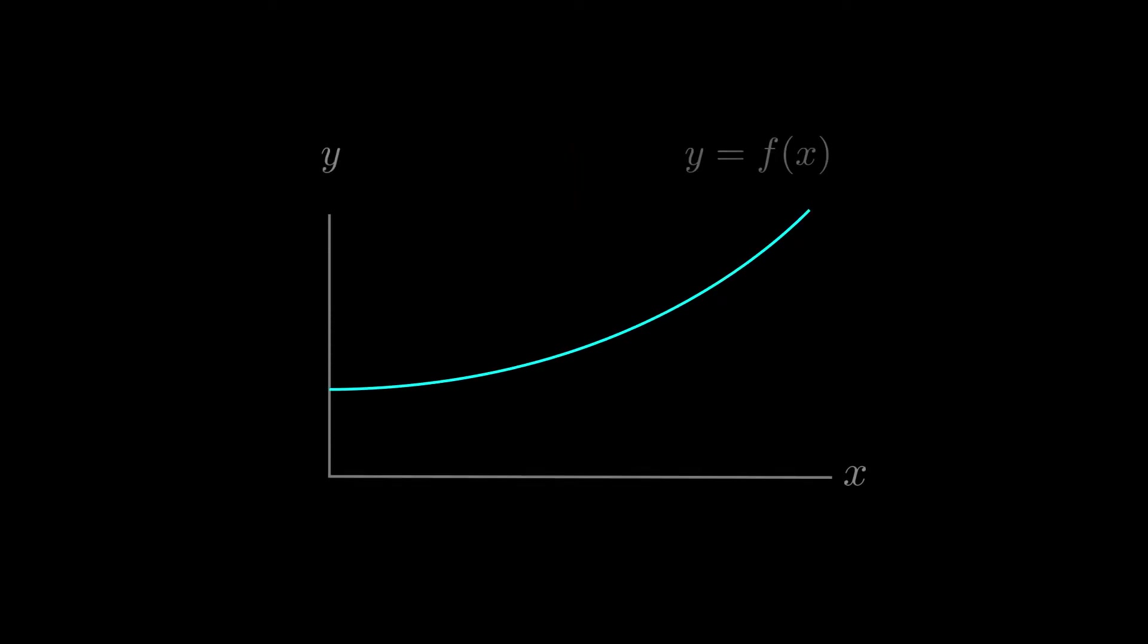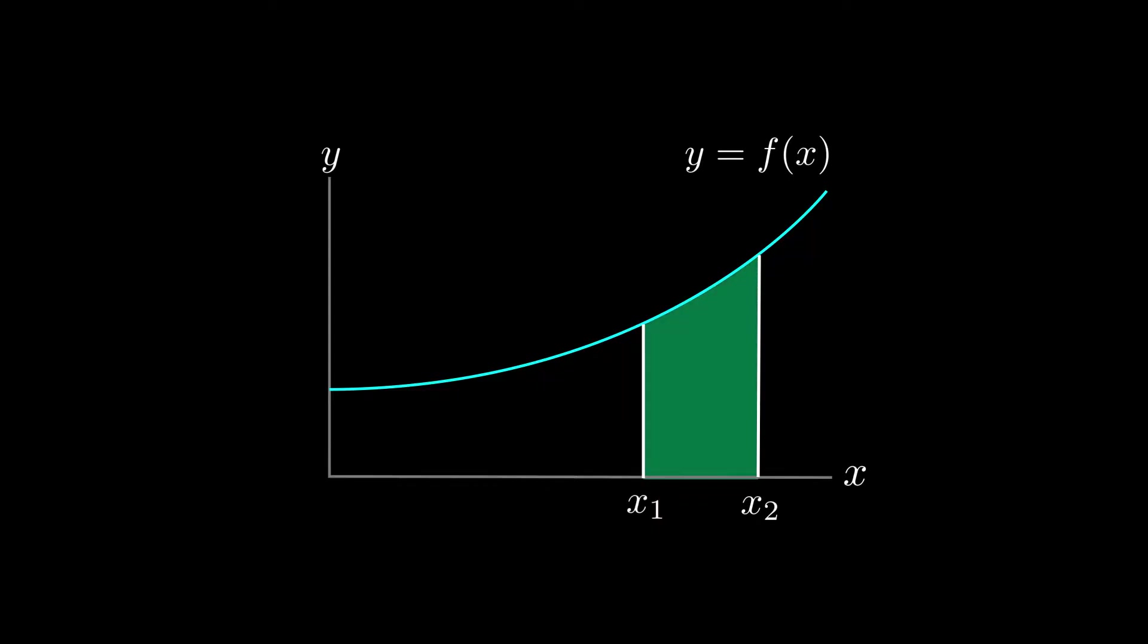But how do we compute the blue and yellow area individually? Well, say you had some function f of x, then we know that the area between x1 and x2 is the integral between x2 and x1 of f of x dx, and since y is equal to f of x, we can write this as the integral between x2 and x1 of y dx.